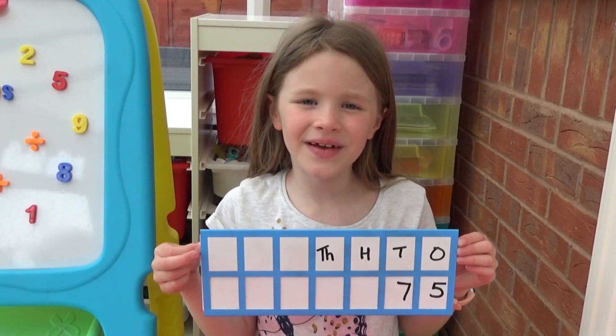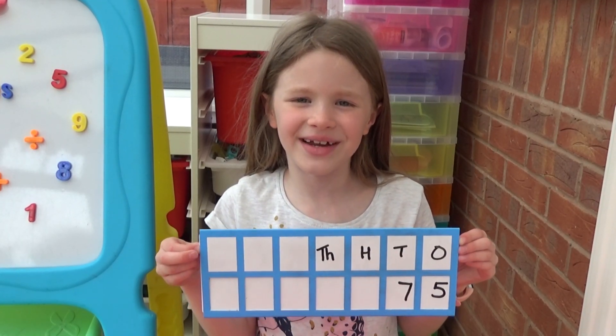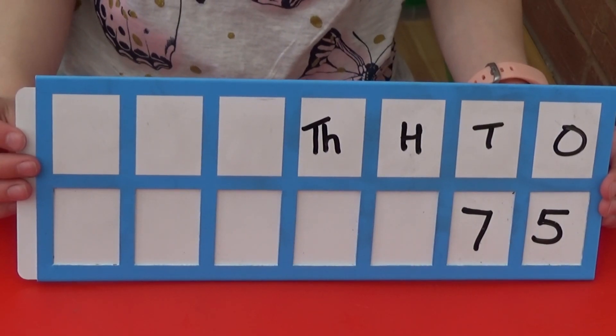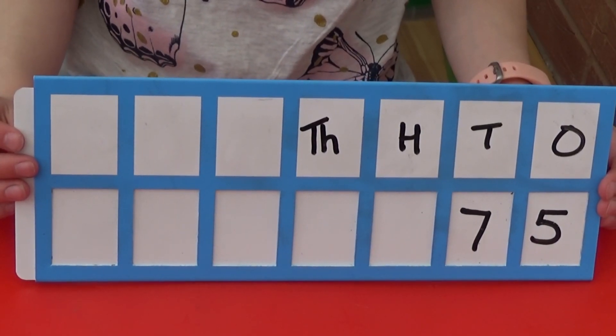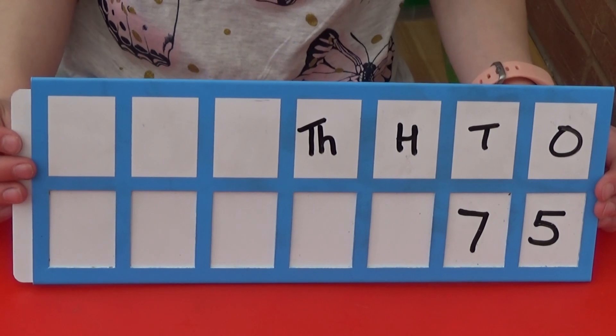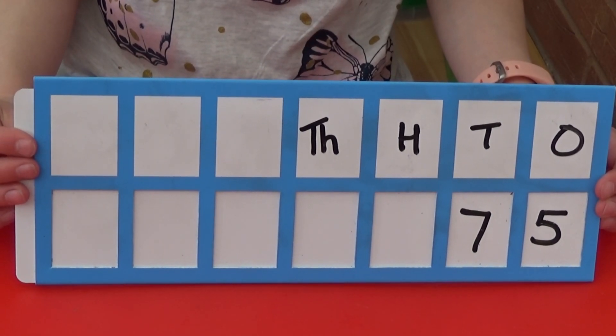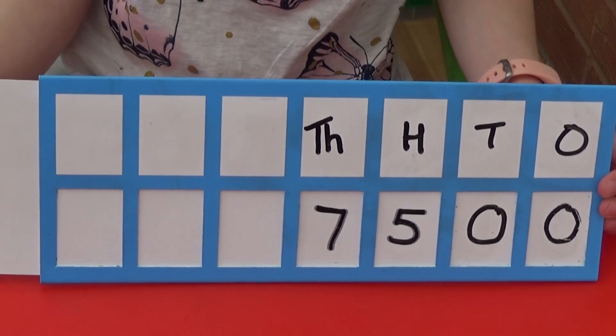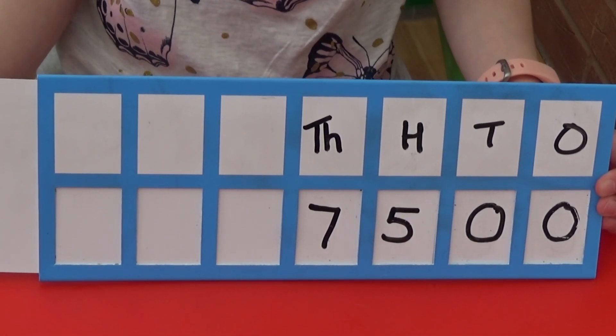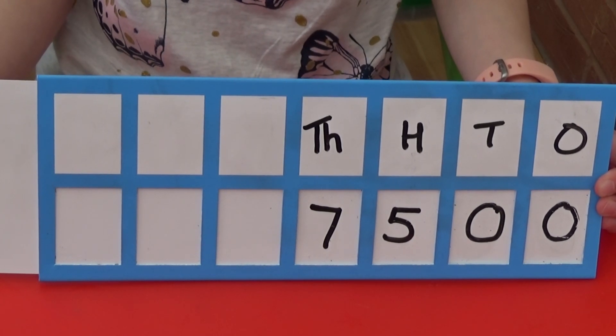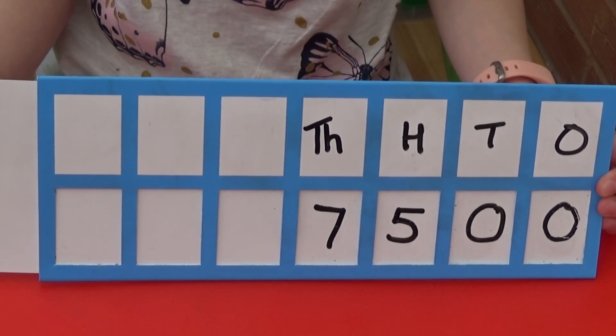We can also show this by using the place value slider. I have written 75 in the 10s and 1s column. As we are multiplying by 100, we need to pull the slider 2 columns to the left. Then I have to write 0 in the columns which have been left empty.